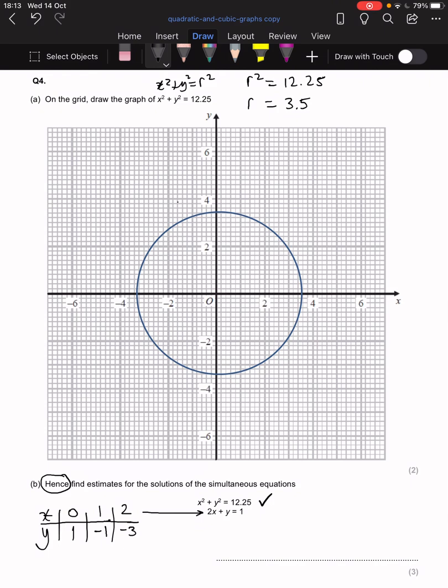This means I am plotting the points 0, 1. So, 0 across, 1 up. 1 minus 1. So, 1 across, 1 down. And then, 2 minus 3, 2 across, and 3 down.